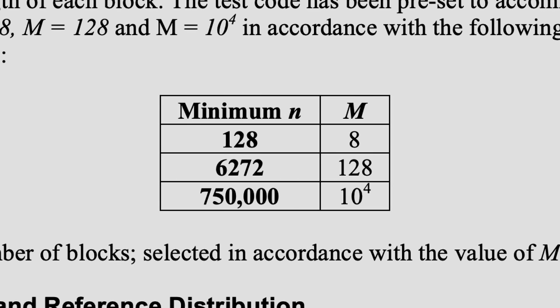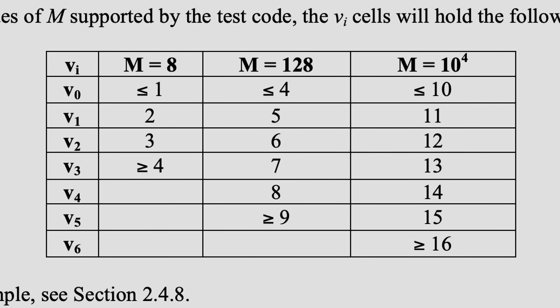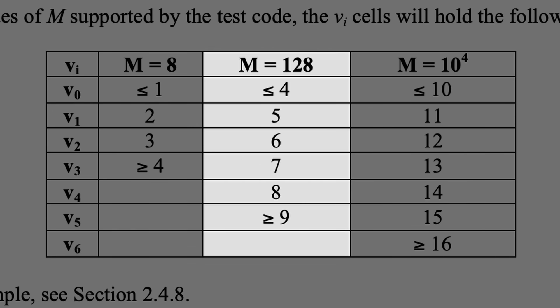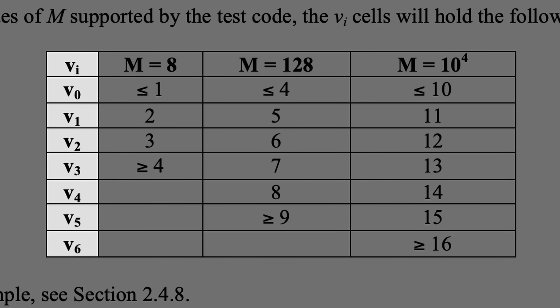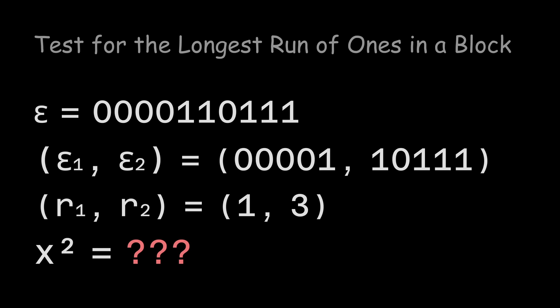Once we pick the appropriate parameters, we need to bucket our longest runs into these buckets, which depend on the block size. Why do the buckets cut off at 4 and 9 for a block size of 128? Magic. And what are the values V0 through V6 supposed to be? Magic. For our example, I can't even tell you what the chi-squared value is supposed to be.